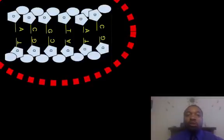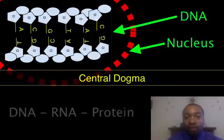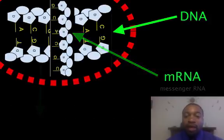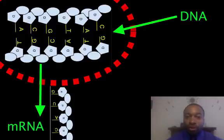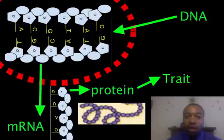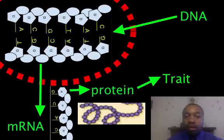This brings us to the central dogma of genetics and biology. DNA contains information that is transcribed into another message called mRNA, or messenger RNA. The mRNA leaves the nucleus carrying the information stored in the DNA, which leads to the production of proteins. As we learned, proteins do certain jobs that determine our traits. So we go from genes in DNA, to the message in mRNA, to the protein that does the job and gives us our traits. In future videos, we'll learn how mRNA is made from DNA and how protein is made from the instructions in the mRNA.